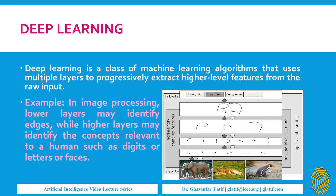In deep learning, the feature extraction step is skipped and data is given directly as input. Deep learning algorithms, such as convolutional neural networks, extract the features by themselves and also handle the classification process. So in typical machine learning we extract features manually, while in deep learning — a subtype of machine learning — we can skip the feature extraction part entirely.